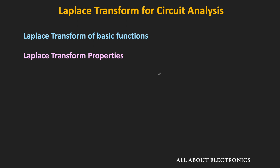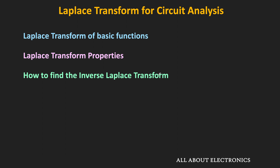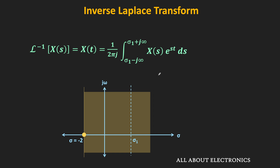Once we do the algebraic manipulation in the s-domain, we need to perform the inverse Laplace transform to get back the time domain response. Let us see the formal definition of this inverse Laplace transform. If X(s) is the function in the s-domain, then by taking the inverse Laplace transform we get x(t), represented by the symbol L⁻¹. The inverse Laplace transform is given as (1/2πj) times the integration of X(s)·e^(st) ds, with limits from σ₁ − j∞ to σ₁ + j∞. This integration is performed on the straight line σ₁ + jω, where ω varies from −∞ to +∞, and this line is within the Region of Convergence.